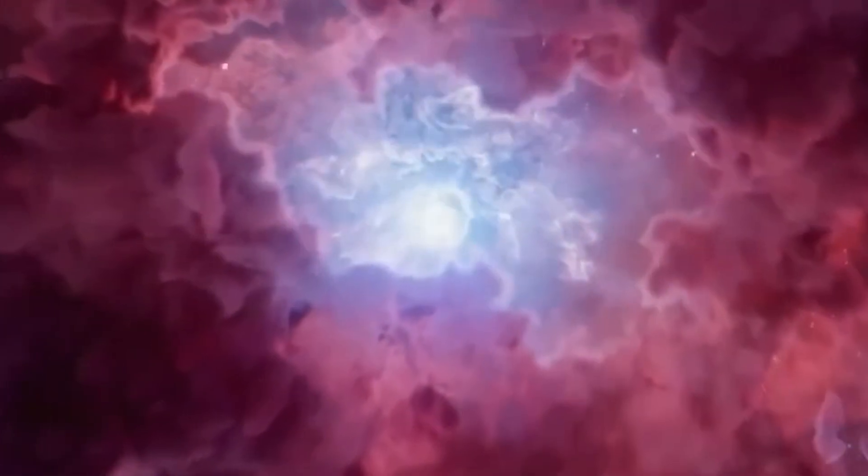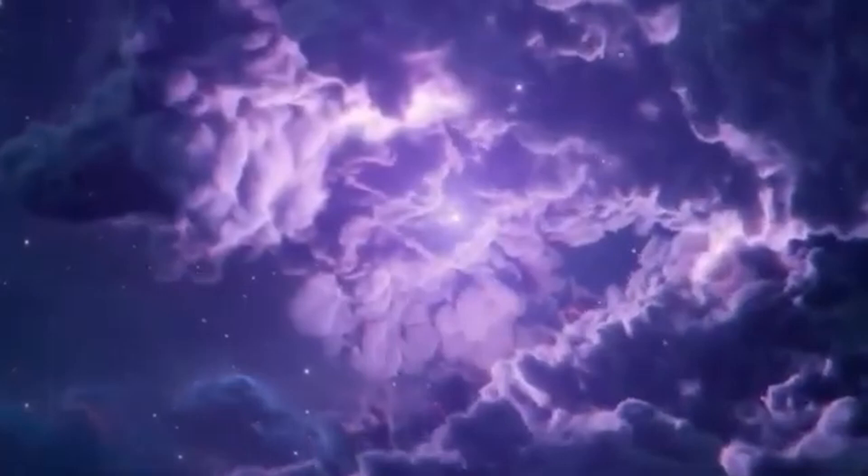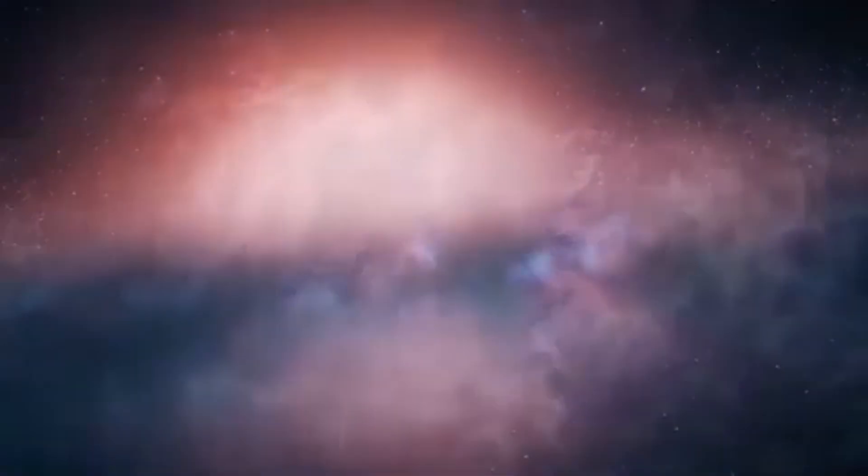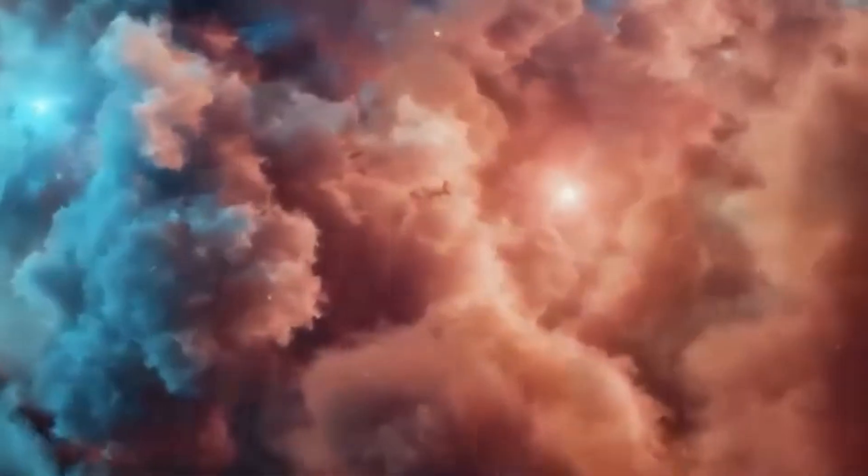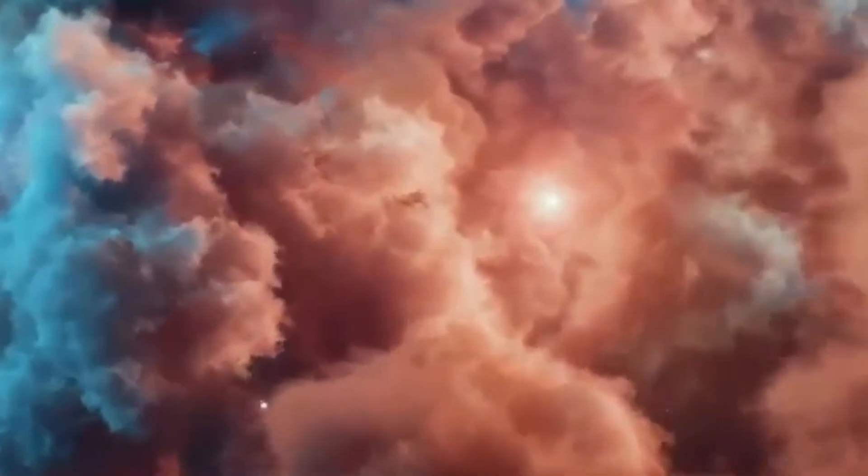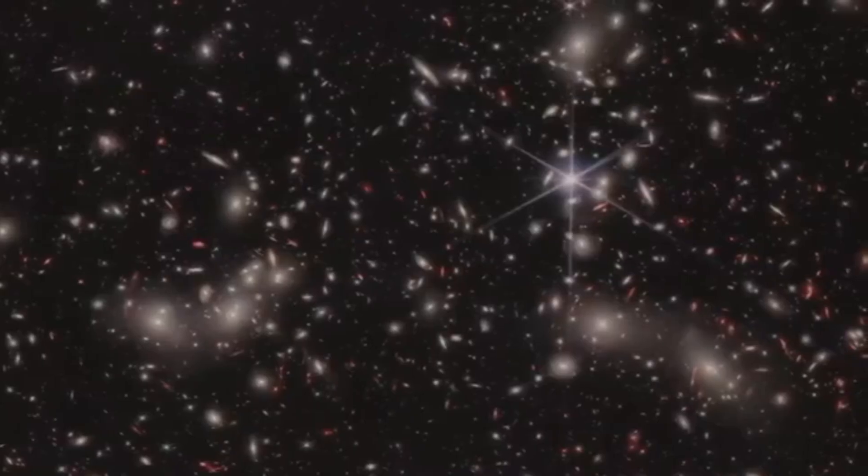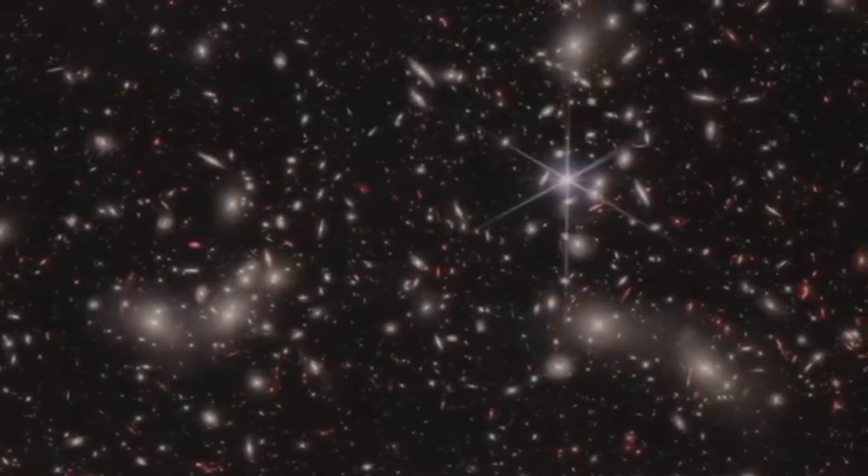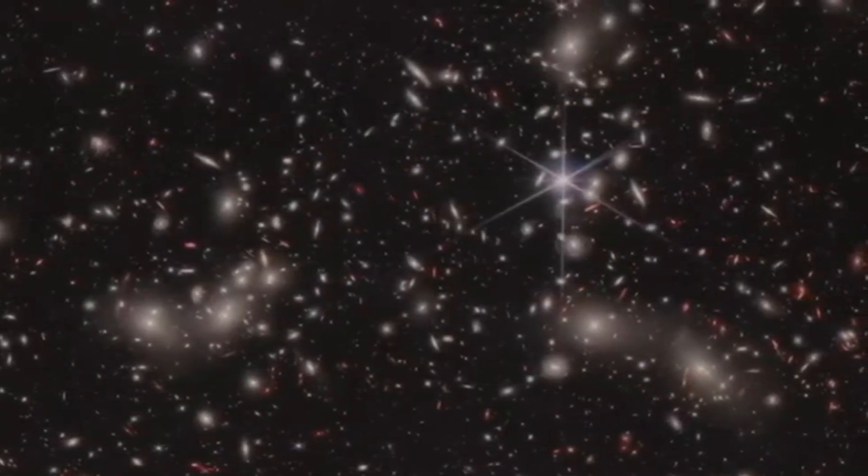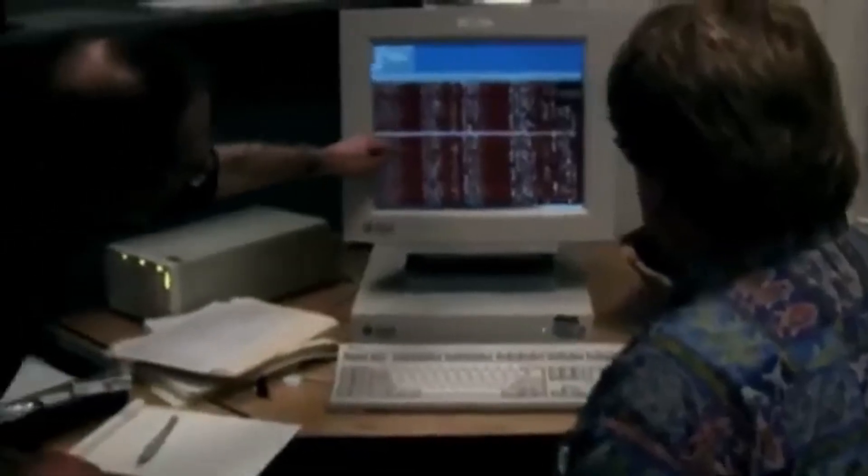The James Webb telescope has already startled astronomers with galaxies too mature, too organized for such a young universe. If these galaxies shouldn't exist, what if they are not mistakes in our models but fingerprints from a world before ours—a shadow civilization stamped into the very structure of space? That possibility electrifies and unsettles at once, because if remnants of the previous universe bleed into ours, then time is not a straight arrow but a looping cycle of destruction and rebirth.